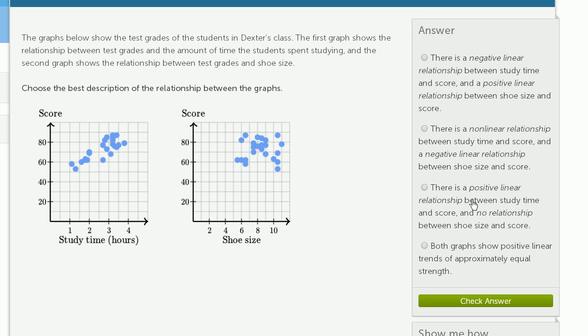There's a negative linear relationship between study time and score. That's not true - it looks like there's a positive linear relationship. The more you study, the better your score. A negative linear relationship would trend downwards.